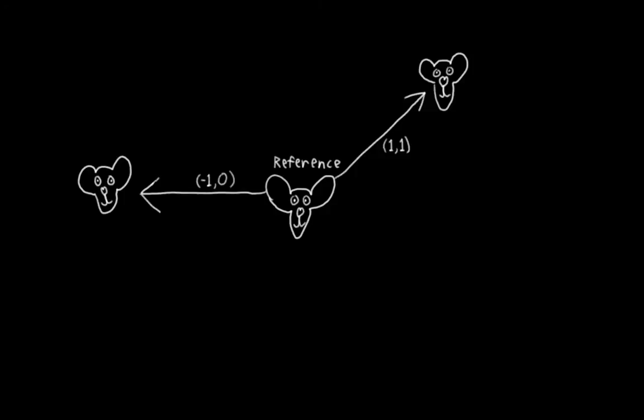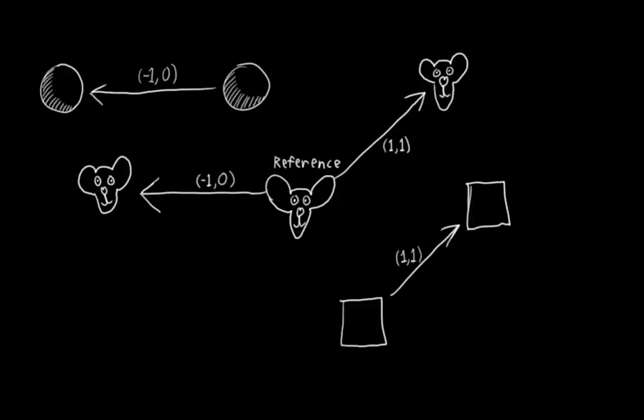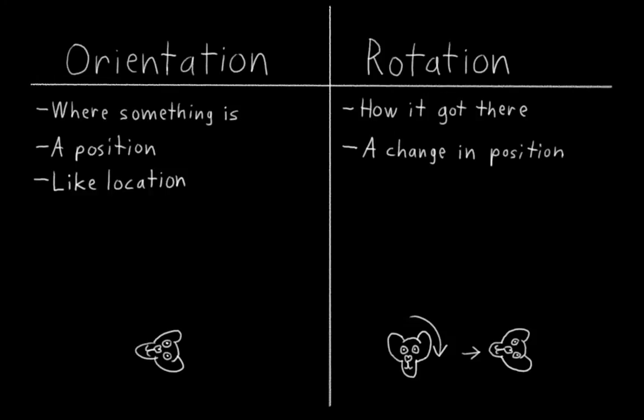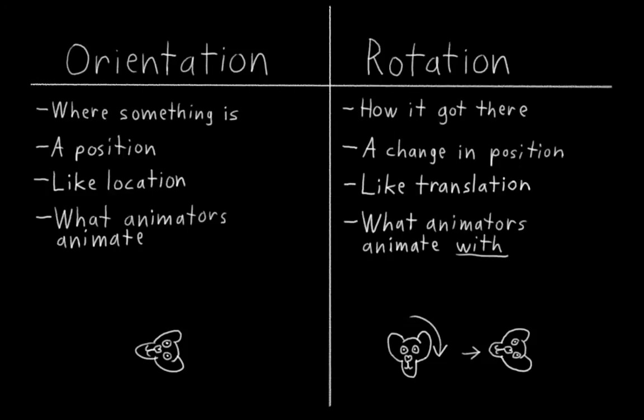We choose an arbitrary reference location, and then we specify other locations with a translation vector from that starting point. But you could, if you wanted, apply that same translation to any location. So orientation is like location, it's simply a position. And rotation is like translation, it's a change in position. And if we think about animators for a moment, they're really animating the locations and orientations of objects, not their translations and rotations. But they're using translations and rotations to specify those locations and orientations.